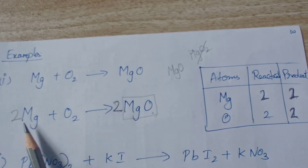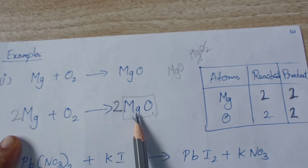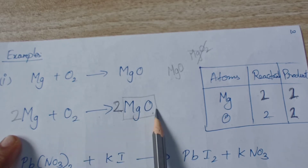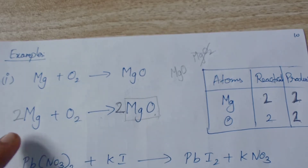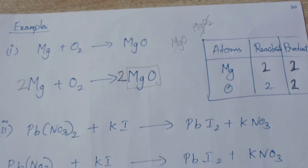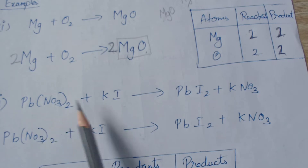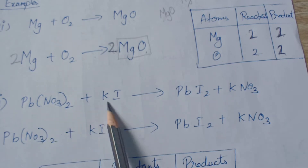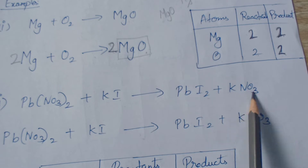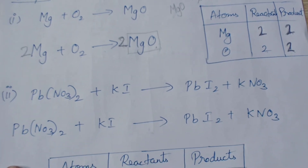Verify: reactant side has 2 Mg and 2 oxygen; product side also has 2 Mg and 2 oxygen. That is how you balance a chemical equation. Next, the second activity: lead nitrate plus potassium iodide gives lead iodide plus potassium nitrate.